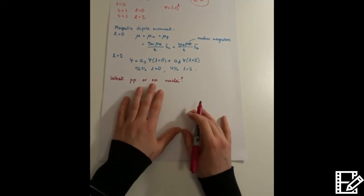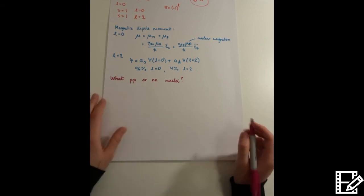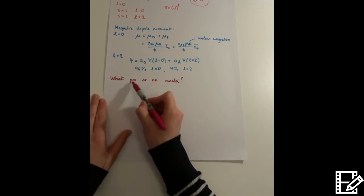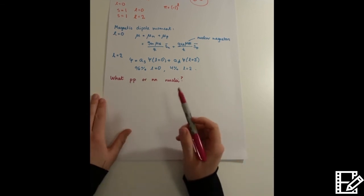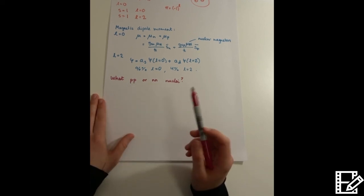So these have never been observed. And now I'm going to explain why. So in the case, for example, of a proton and a proton, these are identical fermion particles, which means they have all the same quantum numbers.